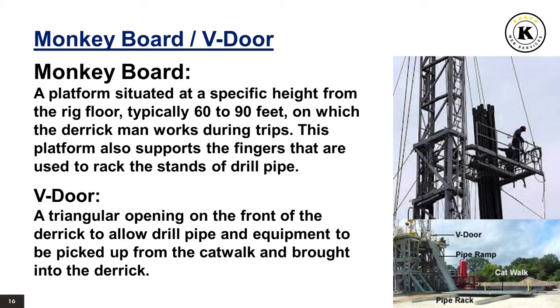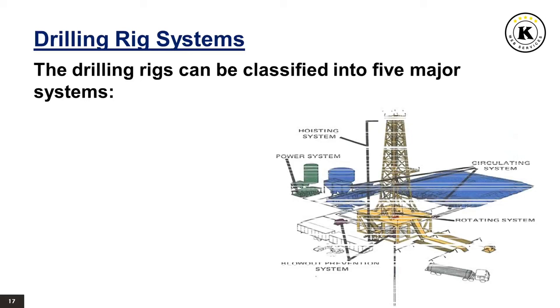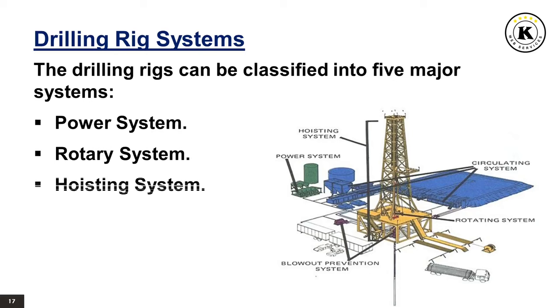Drilling rigs can be classified into five major systems: the power system, the rotary system, the hoisting system, the circulating system, and the well control system.